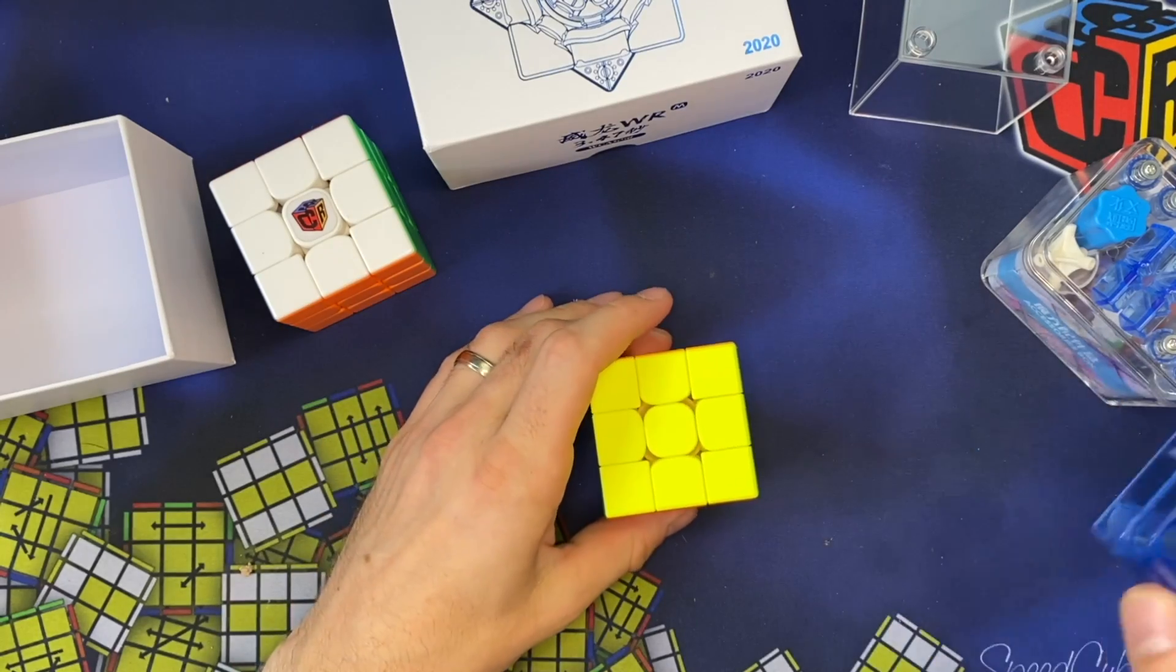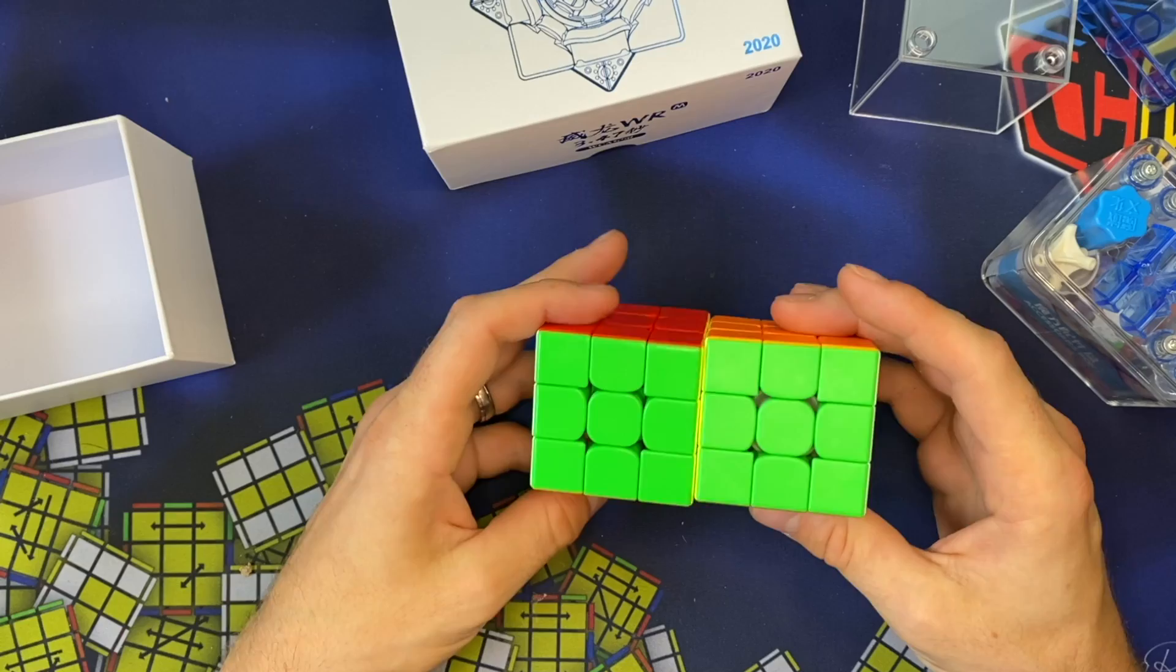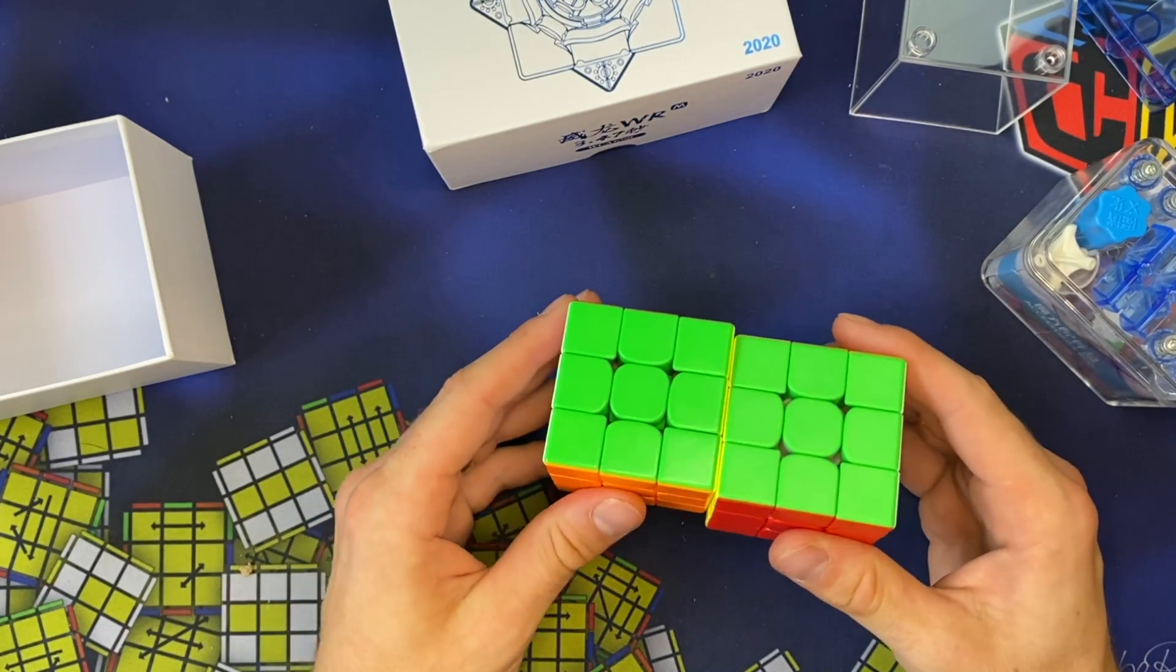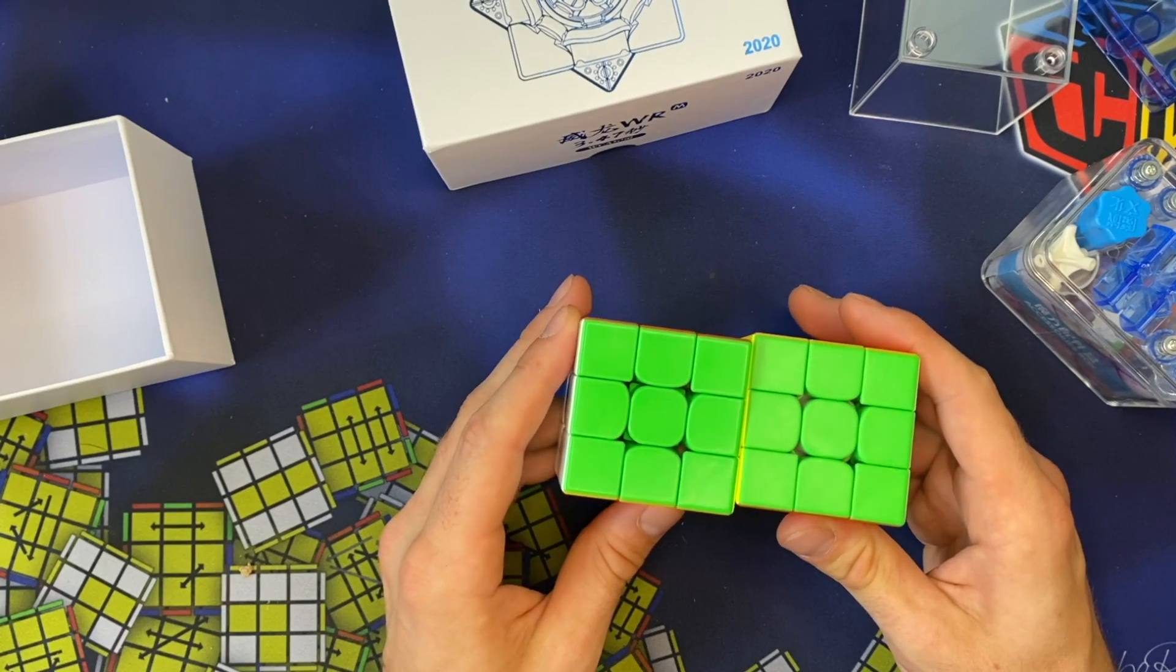So first thing to note, this is that matte plastic that we've been seeing on some other puzzles. Now, if you notice, these were the same at one point. But if you look at just the way the light reflects off of this, this is the RS3 that had the same matte plastic.